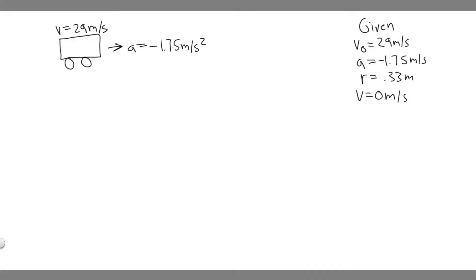A car initially traveling at 29 meters per second undergoes a constant negative acceleration of magnitude 1.75 meters per second squared after its brakes are applied. How many revolutions does each tire make before the car comes to a stop, assuming the car does not skid and the tires have a radius of 0.33 meters?